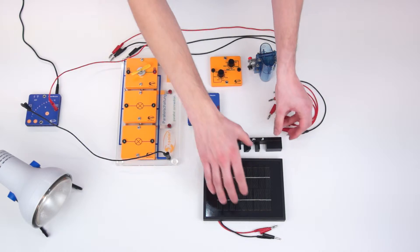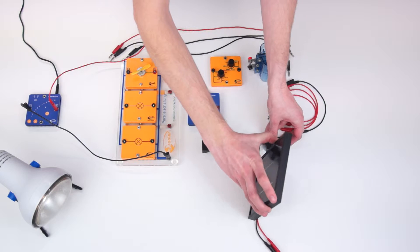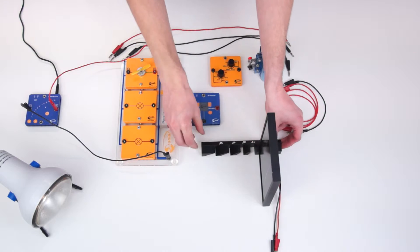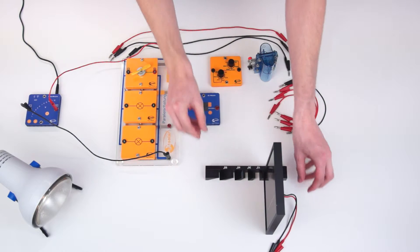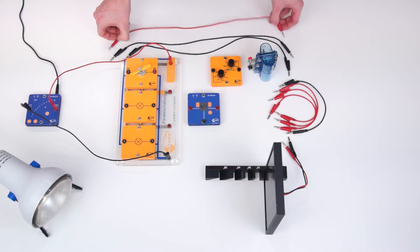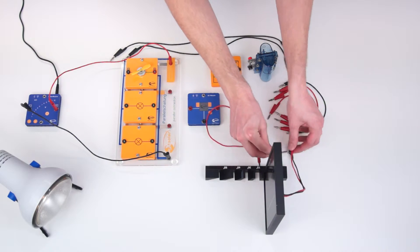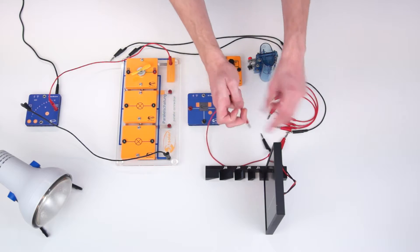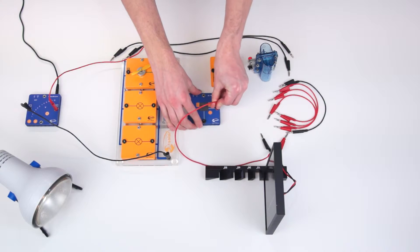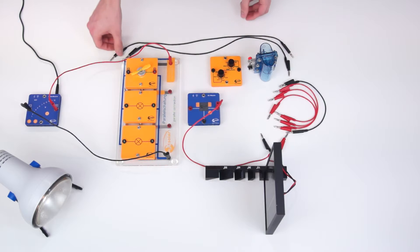In addition we install a photovoltaic system at our building. After we put the solar module on the base we connect the solar module with the AV module. The AV module allows us to measure the voltage and current of the building.